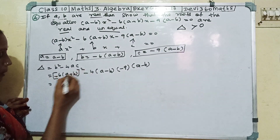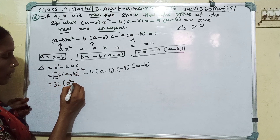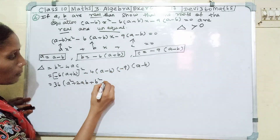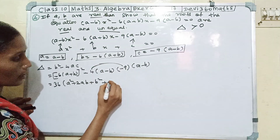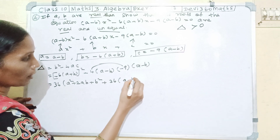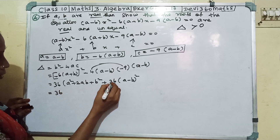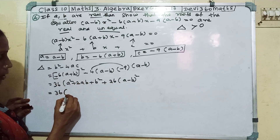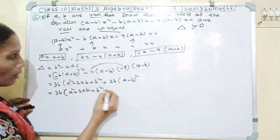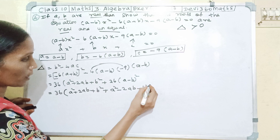Substituting: delta equals minus 6(a plus b) squared minus 4 times (a minus b) times minus 9(a minus b). That gives 36(a plus b) squared, which expands to a squared plus 2ab plus b squared. The minus into minus gives plus, so we add 36(a minus b) squared, which expands to a squared minus 2ab plus b squared.